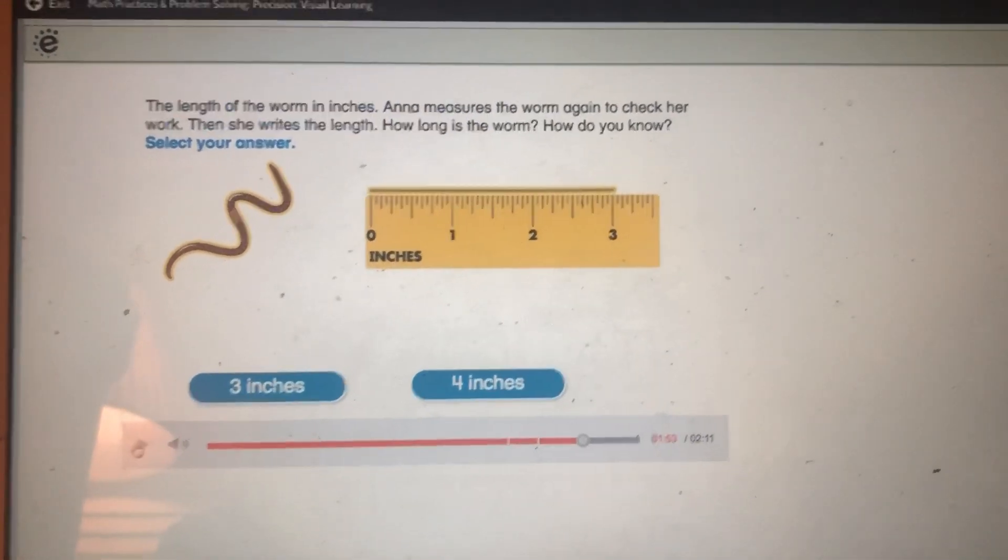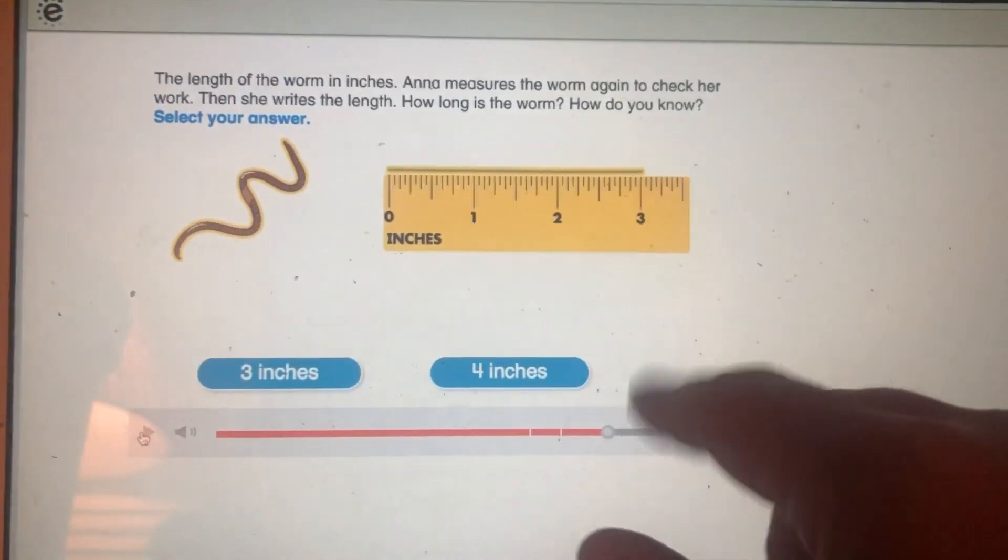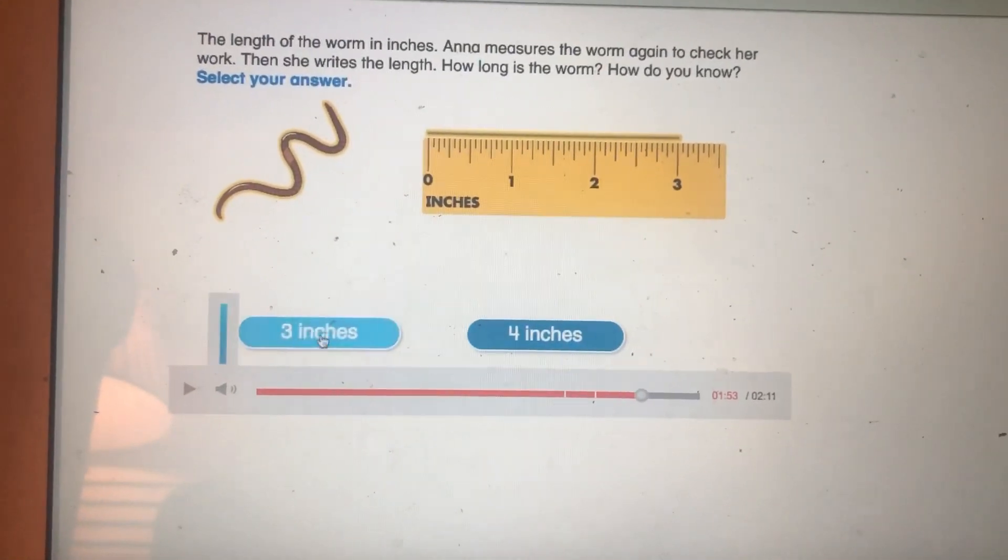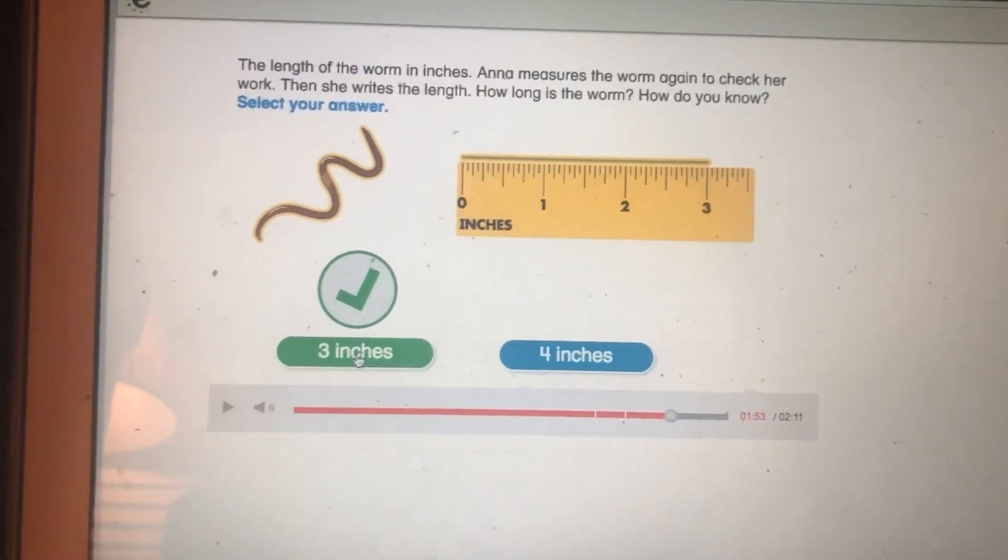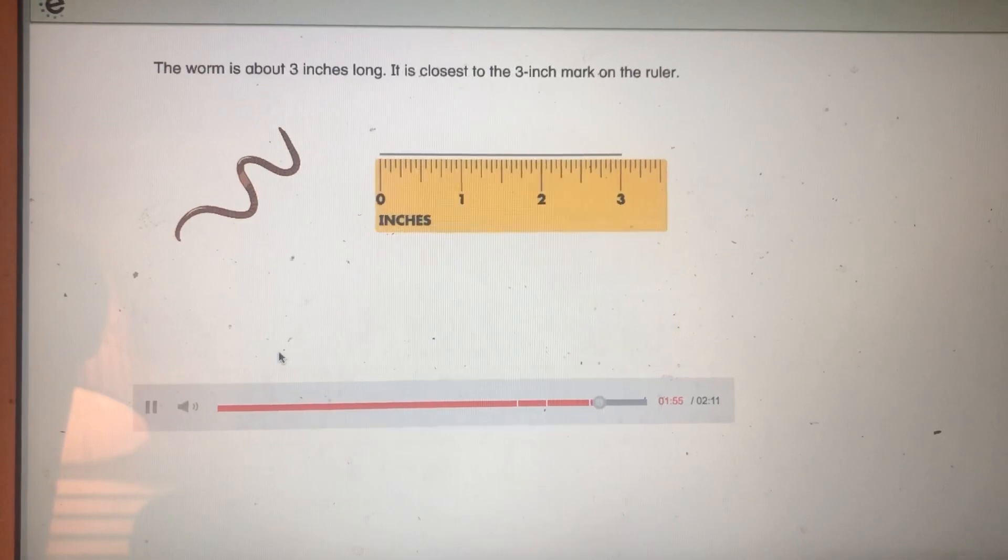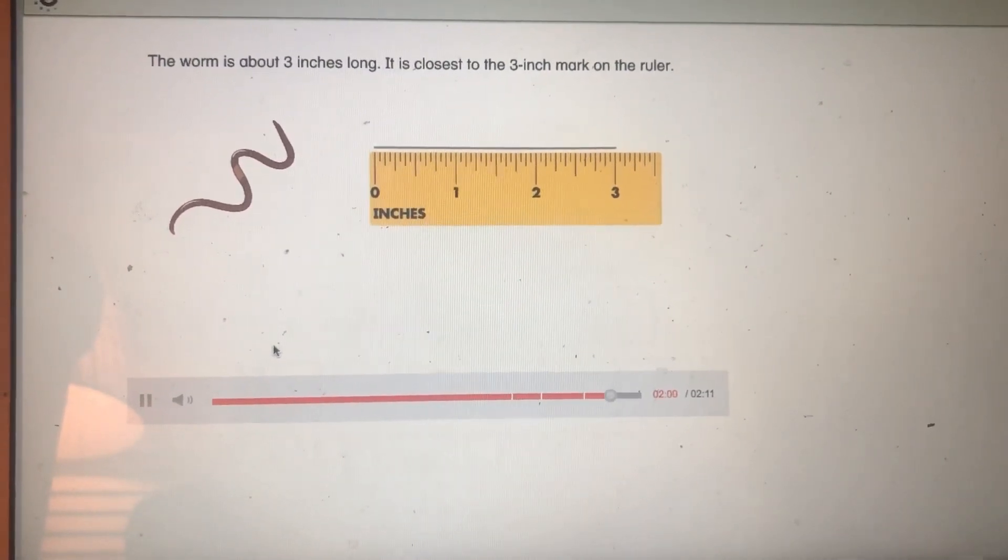The string went along the worm, and then she straightened out the string and put it on a ruler. The worm is about three inches long. It is closest to the three-inch mark on the ruler.